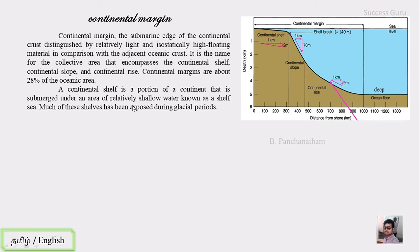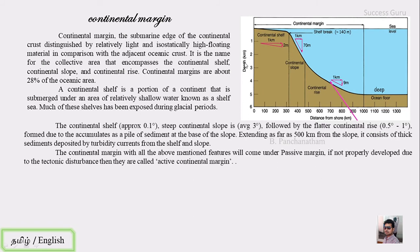The continental shelf is the first feature you encounter when moving from a continent toward the ocean. It is submerged under relatively shallow water known as the shelf sea. Much of these shelves were exposed during geological glacial periods when water moved toward the poles to form glaciers, dropping mean sea level. The continental shelf has an inclination of approximately 0.1 degrees, followed by the continental slope with an average inclination of 3 degrees, and then the continental rise with a gentle inclination of 0.5 to 1 degree. The continental rise is formed due to accumulation of sediments at the base of the slope, extending up to 500 kilometers.